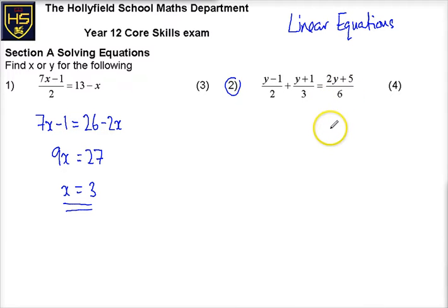I'm going to multiply every fraction by 6. I'm going to multiply everything by 6. Multiplying by 6 and dividing by 2 is the equivalent to, well, if you're not sure, you can miss this step out if you're confident.